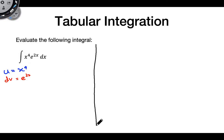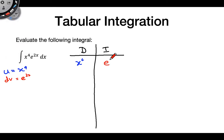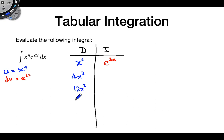Let's go ahead and set up our DI table. In the D column, what we're differentiating goes in — so we have x to the fourth. What we're integrating goes in the I column — so e to the 2x goes in here. Let's differentiate: derivative of x to the fourth is 4x cubed, then 12x squared, then 24x, then 24, then 0. Pretty standard power rule.